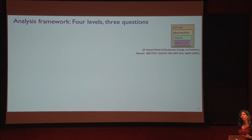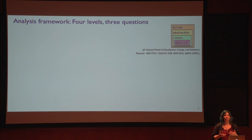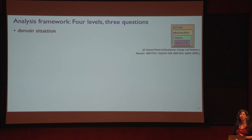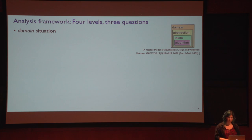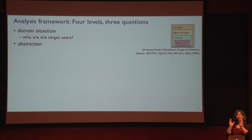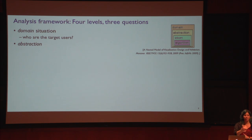To help you think about visualization more generally, I've got an analysis framework of four levels of design and three kinds of questions as a scaffold. I'll start with the idea of a domain situation. To me, you are a domain — specifically physics, more particularly astrophysics. A domain is a very specific situation of who the target users are. There are many domains: physics, chemistry, biology, finance, and all kinds of specific situations that encompass not only your background and training.